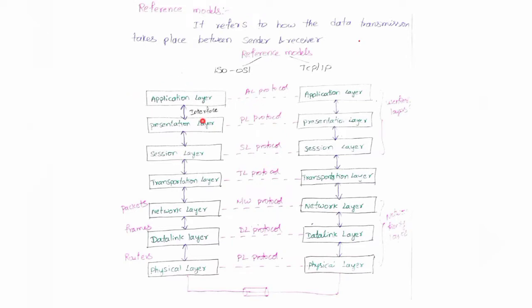This is the architecture of the OSI model. The layers are: physical layer, data link layer, network layer, transport layer, session layer, presentation layer, and application layer. The first three higher-level layers are called user-friendly layers, and the lower three — physical, data link, and network — are called network-friendly layers. Transport is the middle layer. Data is represented as packets in the network layer, frames in the data link layer, and binary bits in the physical layer. Data is transferred from the physical layer of system 1 to the physical layer of system 2 through the transmission medium, which may be wired or wireless.